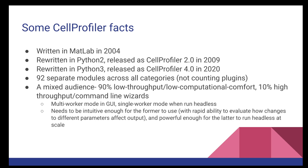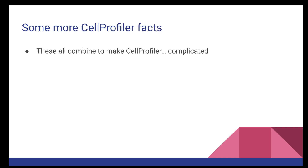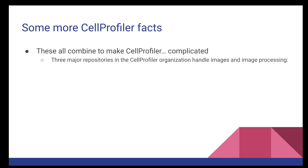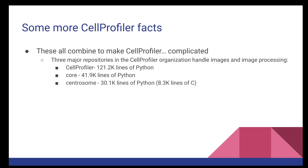We need a program that's intuitive enough for the former to use, with the rapid ability to evaluate how changes to different parameters affect output — which means a lot of GUI code and custom code for interacting with images quickly — but also powerful enough to run headless at scale and produce these large measurement sets for really large screens. All of this means that CellProfiler is a really complicated codebase: the many authors over the years, the multiple languages it's been in, and the many different user bases that we serve. The three major repositories in the CellProfiler GitHub organization that handle images and image processing combine to nearly 200,000 lines of Python code and some C for processing.